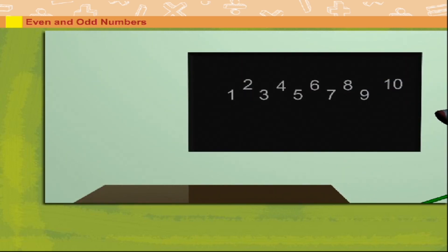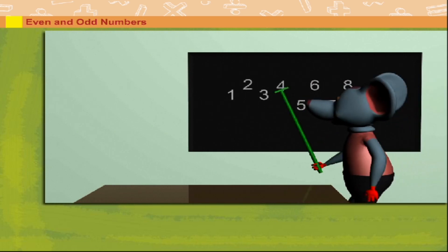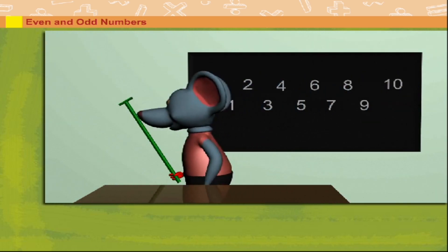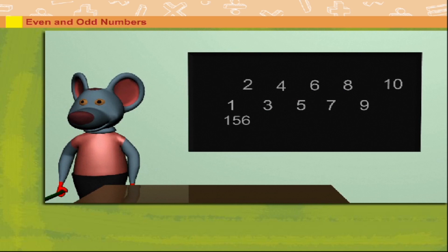He pulls down the digits 9, 7, 5, 3 and 1. He divides 156 by 2 and gets 78.